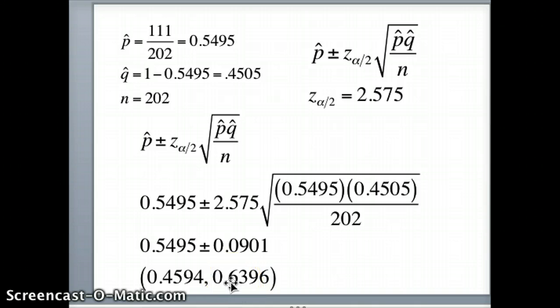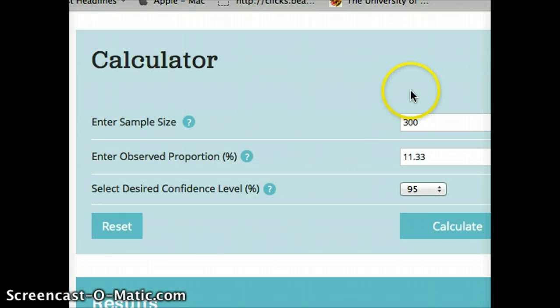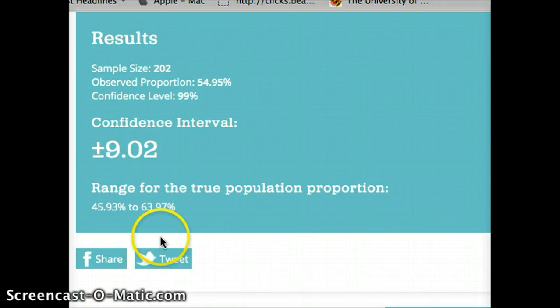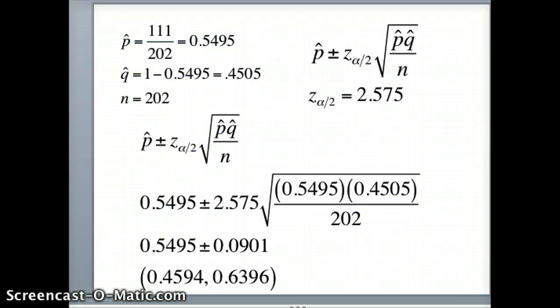Let's check this on the applet. This time our n is 202, and we need to write this as a percentage, so that's 54.95%, and we want a 99% confidence interval. We'll say calculate. Range of 0.4593 to 0.6397. You'll notice I'm good to three decimal places, but not four. That's because the computer is likely using a more precise version of z-alpha by 2 than I'm using. But I'm certainly satisfied with that.